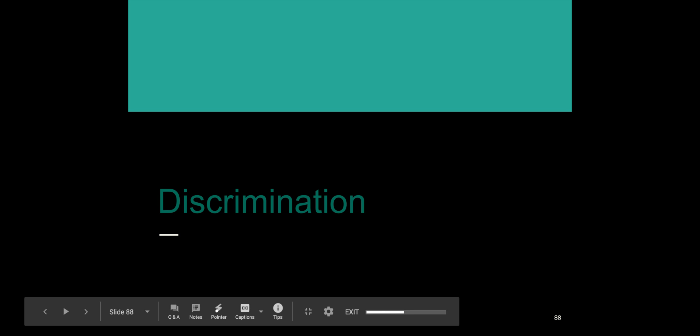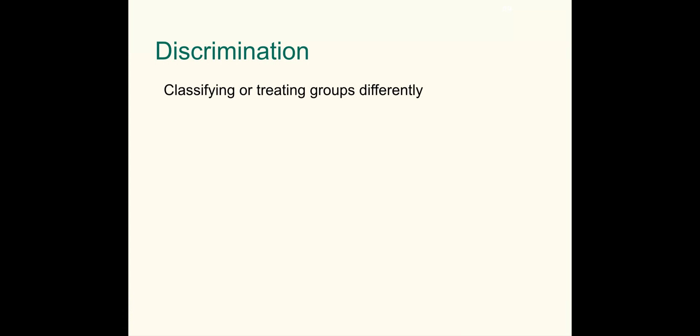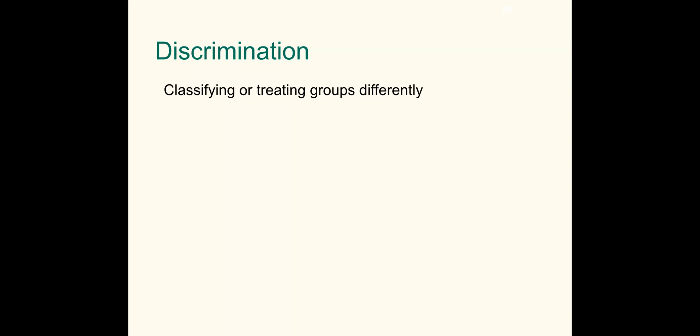This is your government video for discrimination and civil rights. Discrimination can exist in many forms — it's basically when the government or a private individual or business classifies or treats groups differently. The question legally becomes: should the government be able to do that, and to what extent and when?